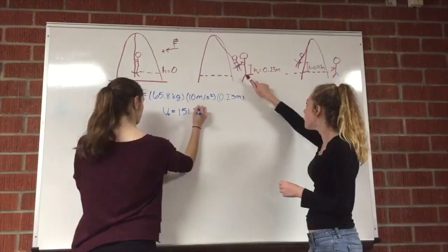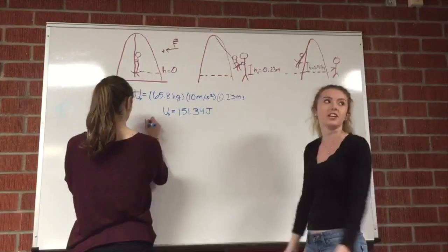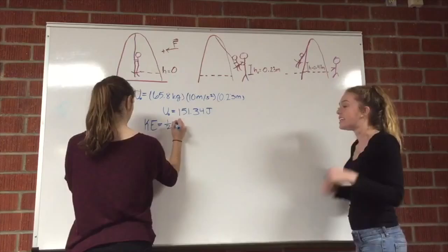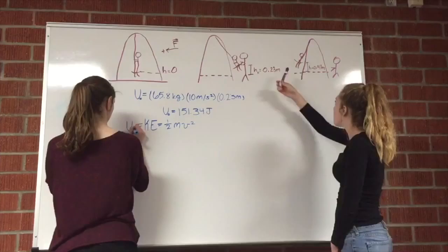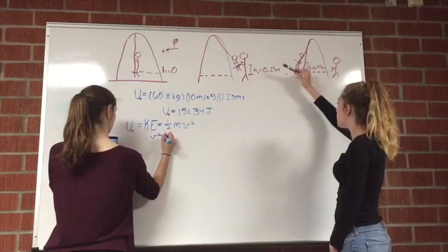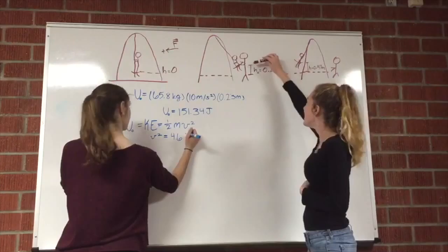Using conservation of energy, we are finding the initial potential energy that Cassie has when Jackie lifted her up on the swing. Energy is conserved, so that's going to equal the final potential energy,